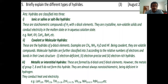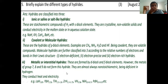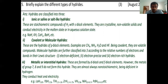B2H6 (diborane) is an electron-deficient hydride. Interstitial or metallic hydrides are formed by transition metals. Examples: LaH2.87, YbH2.55. The fractional composition occurs because hydrogen enters interstitial spaces non-stoichiometrically. Important note: Group 7, 8, and 9 elements do not form interstitial hydrides — that is a key point to remember.